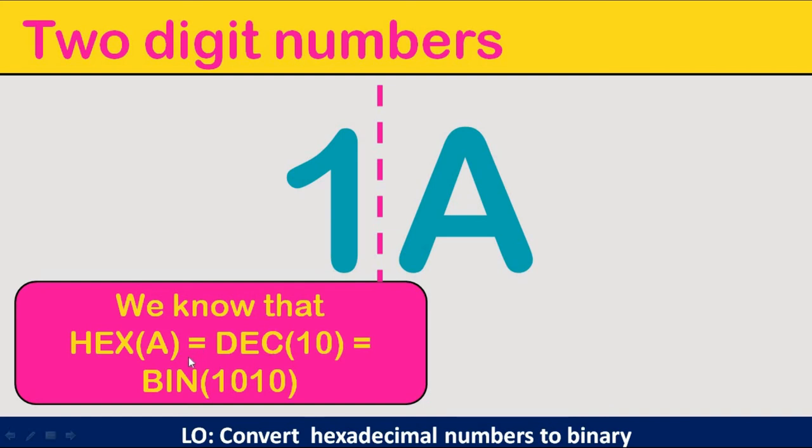So this is the reference for 1 when we are dealing with binary numbers. When it comes to A, remember, A refers to 10 in denary, but in binary, it is 1010. So this is the reference for A.